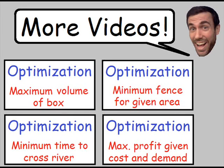I hope this video gave you a better idea of how optimization is used. There are many other optimization examples which are quite different, so I made a bunch of other videos as well. In the top left corner I have the link for finding the maximum volume of a box, top right for minimum fence for a given area, bottom left for minimum time to cross a river, and bottom right for a business example finding maximum profit given cost and demand. Thank you so much for watching!